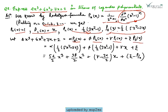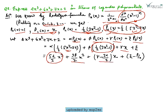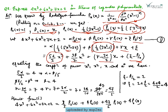Substituting the values: α·(1/2)(5x³-3x) + β·(1/2)(3x²-1) + γ·x + ζ·1. After simplifying, this becomes (5α/2)x³ + (3β/2)x² + (γ - 3α/2)x + (ζ - β/2).